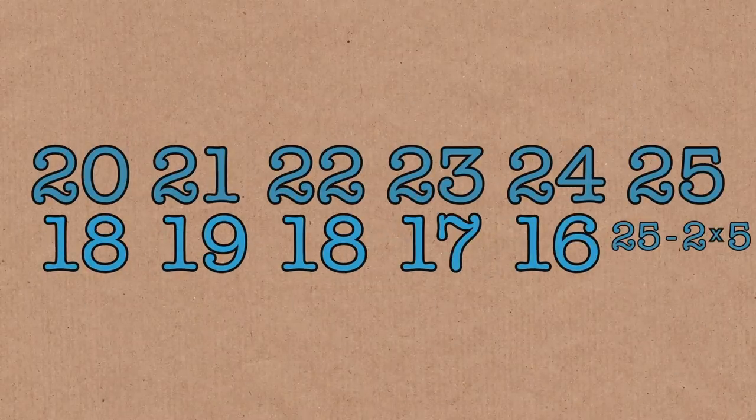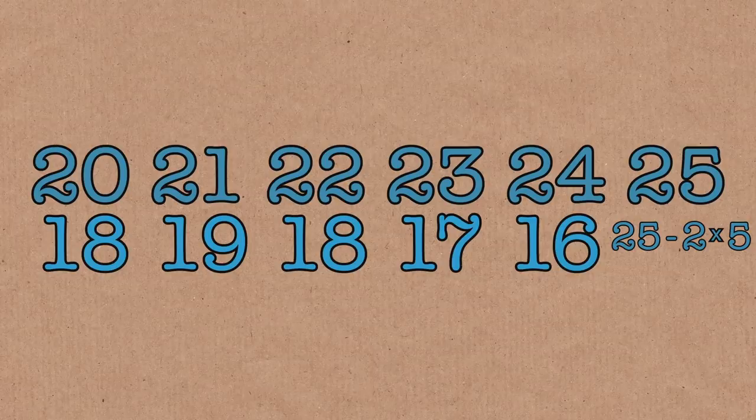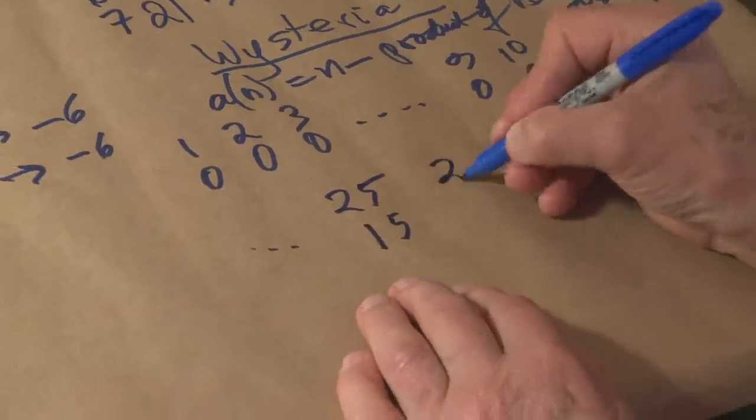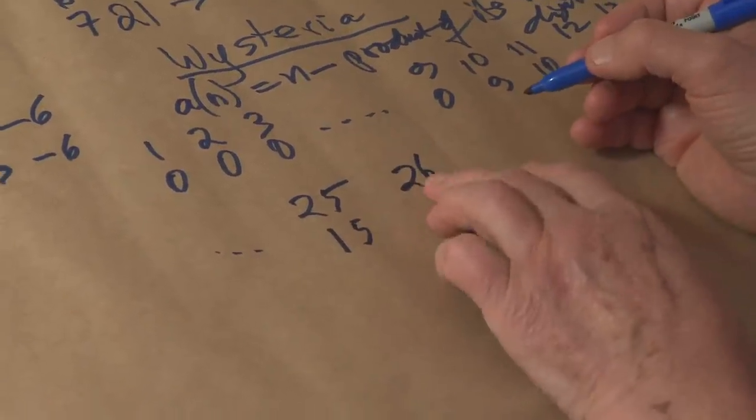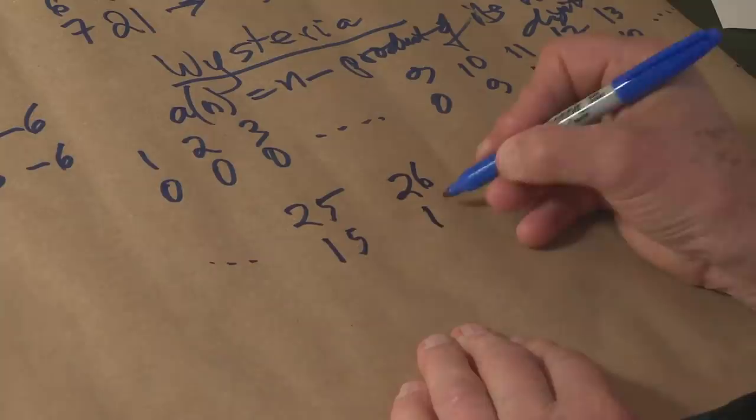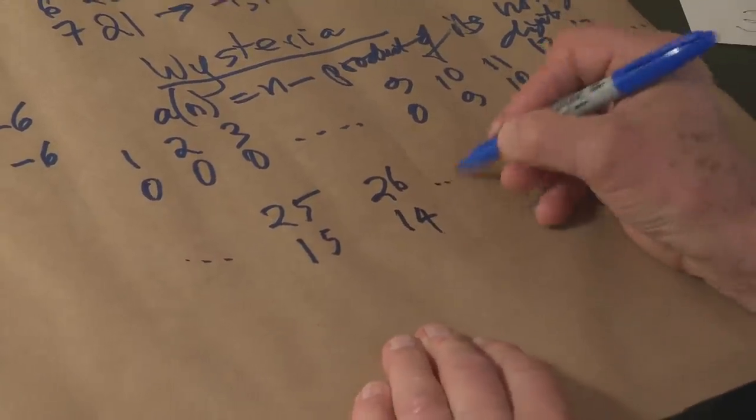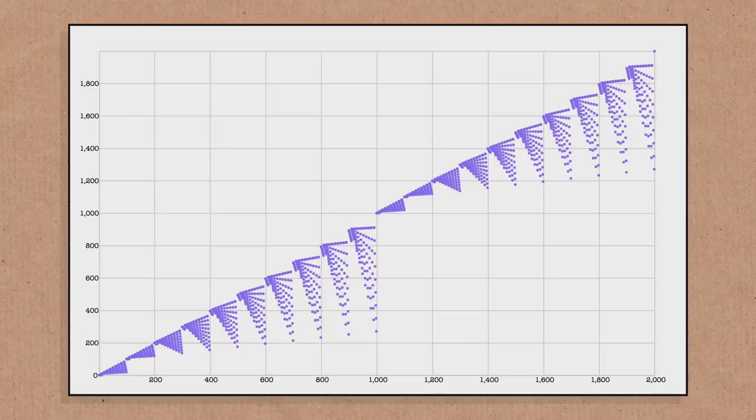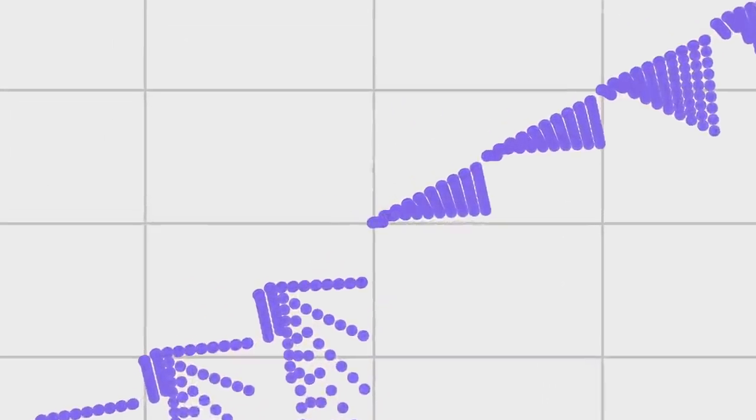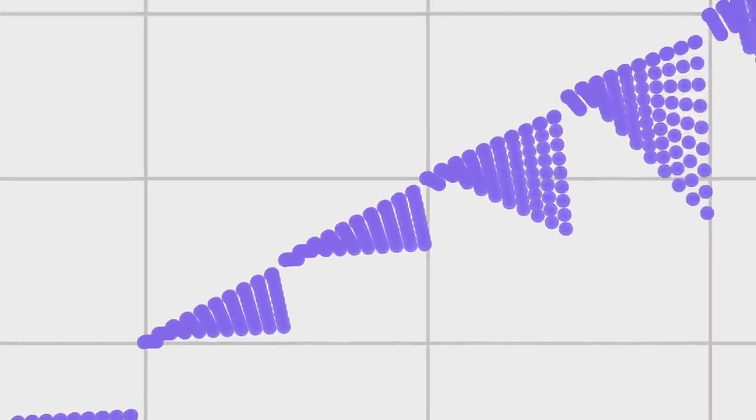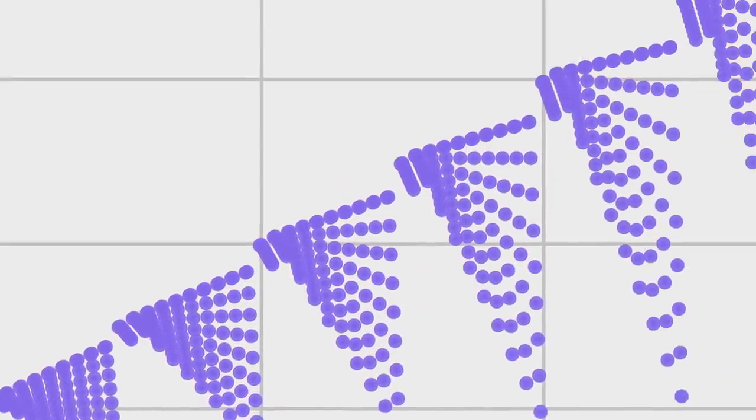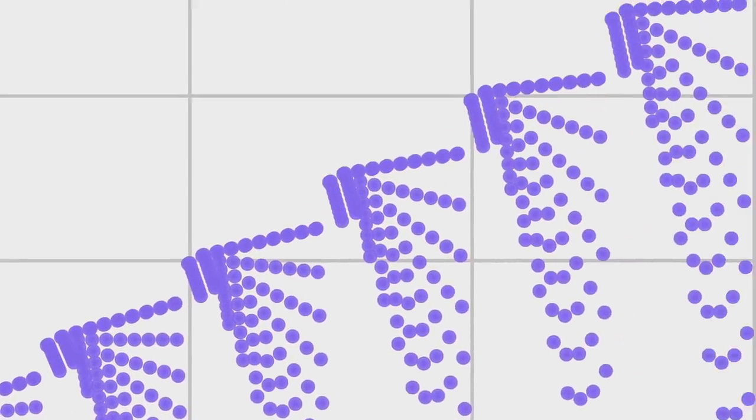By the time we get up to twenty-five, product of digits is ten. So we subtract ten from twenty-five and we get fifteen. So it's drastically changed. Twenty-six subtract twelve from twenty-six and we get fourteen. And so on. The graph looks like this. I call it wisteria because to a gardener this looks very like wisteria. Purple flowers you see in the trees.